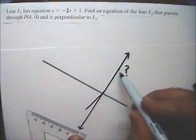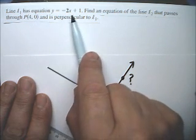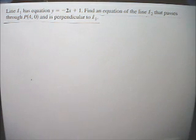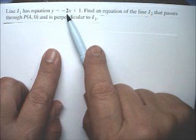And this is possible, of course, as long as this point is not on the original line. And if you put in 4 comma 0, you'll see it does not satisfy that first equation. So we have to find the new line has a slope of positive one-half.